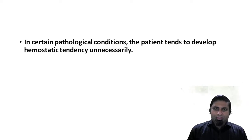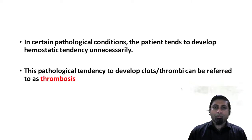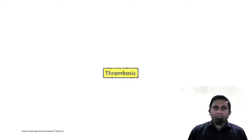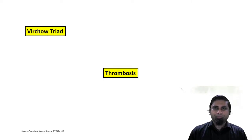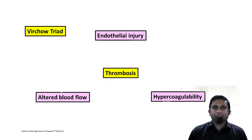In pathological conditions, the patient tends to develop hemostatic tendencies unnecessarily, and this pathological tendency to develop clots or thrombi is referred to as thrombosis. There are three predisposing factors that make a patient more predisposed to development of thrombi — this triad is called Virchow's triad. They include endothelial injury, hypercoagulability of blood, and abnormal blood flow, which can act singly or in combination to predispose the patient to a prothrombotic state.